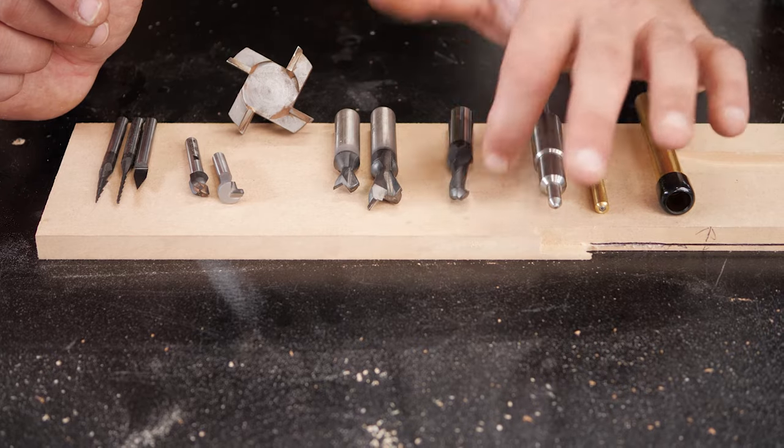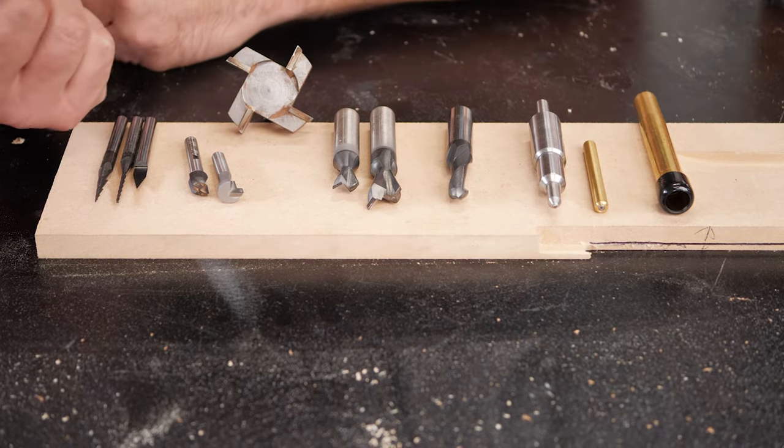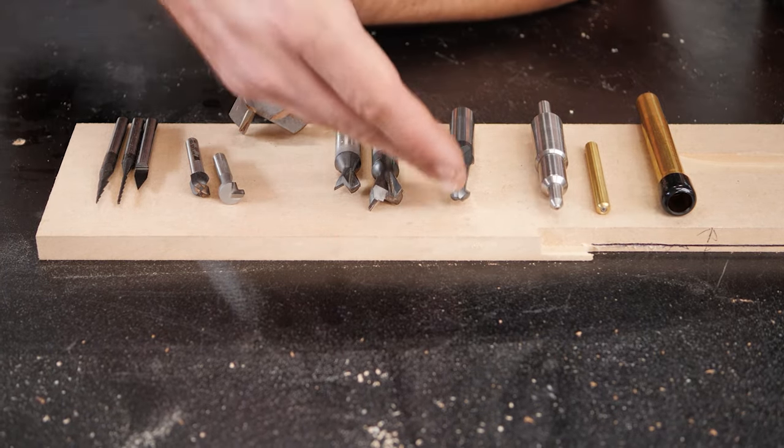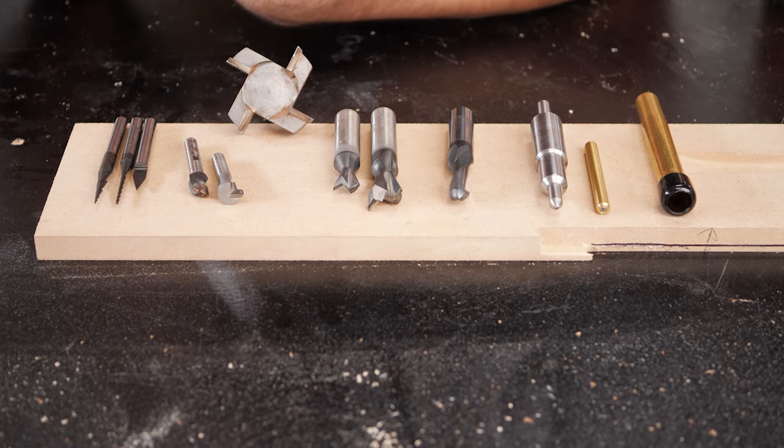This is a ball nose bit. You could create a rounded groove like the handle for a cutting board or creating shapes on the CNC. This would obviously offer a lot less detail.